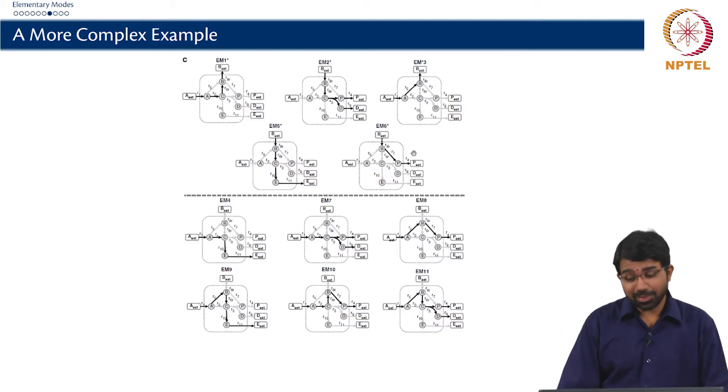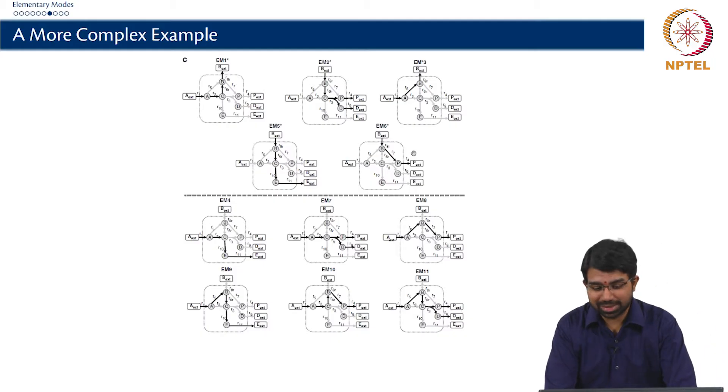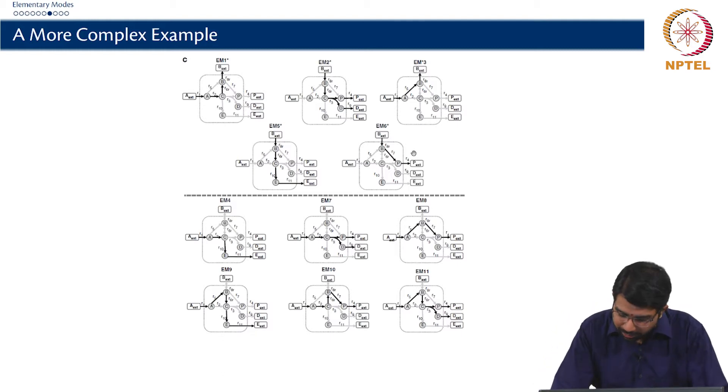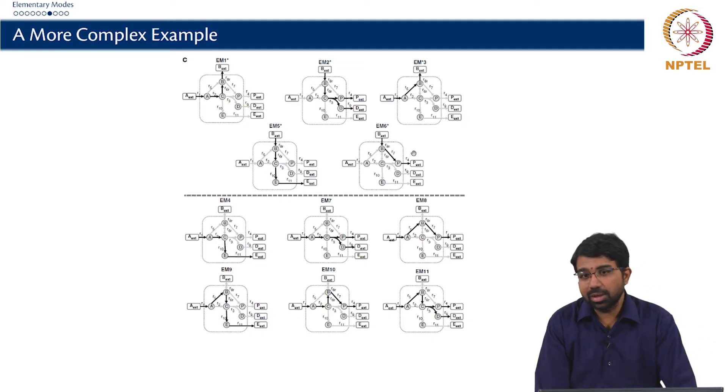They are not just paths, they have to honor stoichiometry and things like that. So they are not just graphical paths. Because from C, you have to produce P and D. Imagine if that reaction were reversible, you need both P and D to form C, which is never taken care of in graph theory unless you do it very carefully. In a bipartite graph or hypergraph scenario, you might be able to do it.